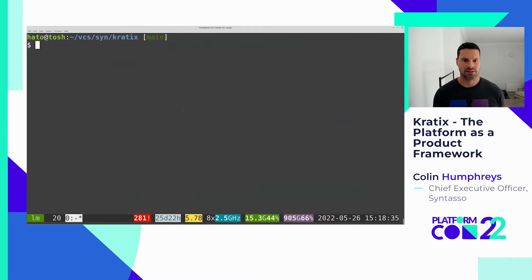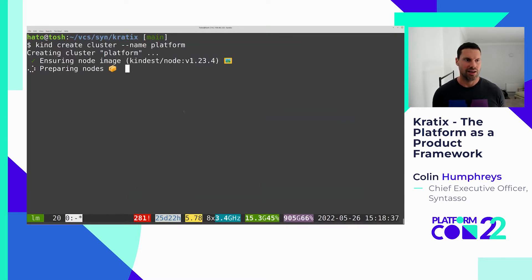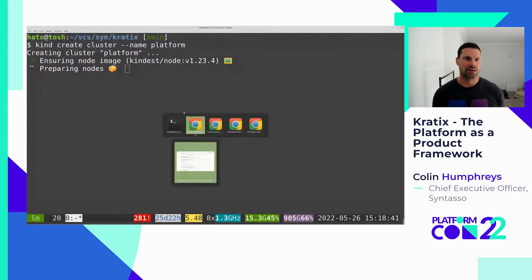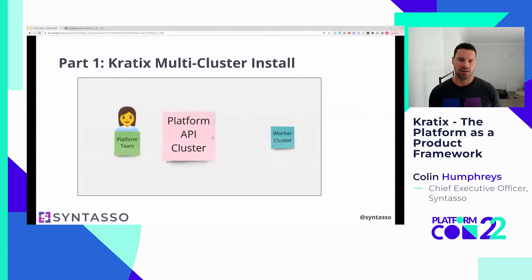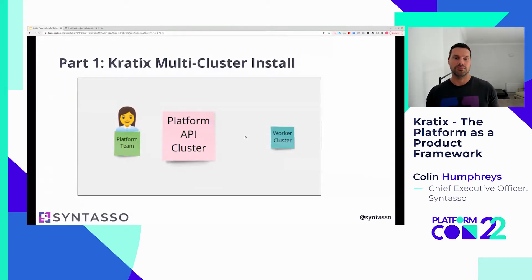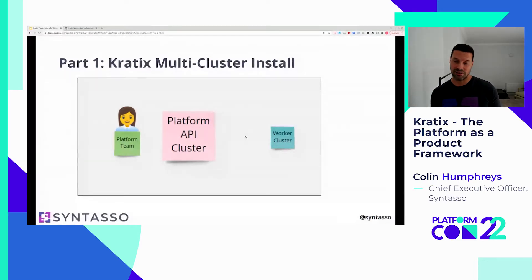Let's copy those commands and get them running on my laptop. We're now creating a platform cluster. Minio is going to be running as a GitOps repository on the platform API cluster for the worker clusters to stay in sync with. When application teams make requests for the platform, those requests are formed into workloads, placed into our GitOps fabric, and transferred to the worker clusters. The worker clusters continuously converge on the state declared by the platform API cluster.